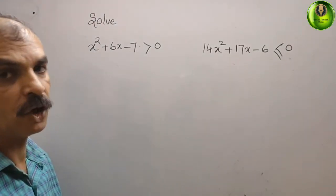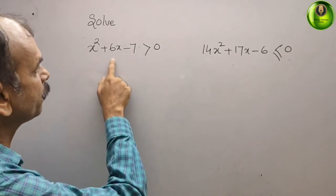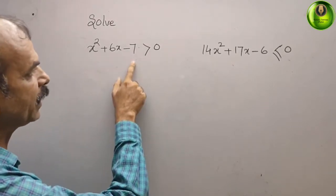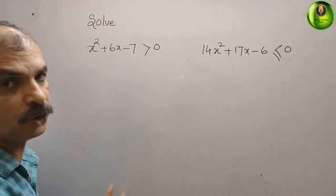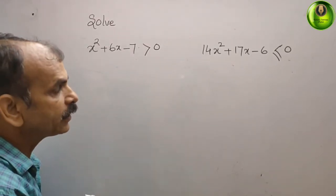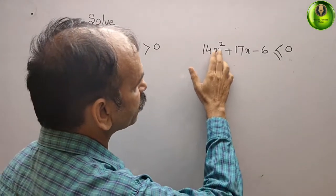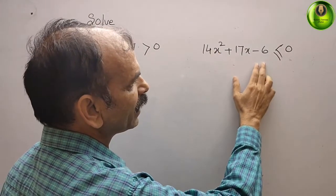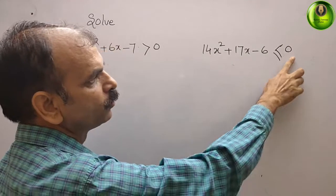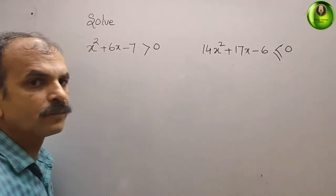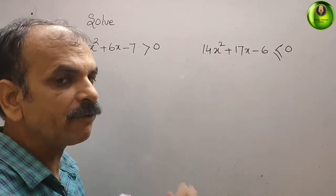We have two problems to solve. The first is x² + 6x - 7 > 0, and the second is 14x² + 17x - 6 ≤ 0. These are inequality problems, so we will use the inequality method to solve them.